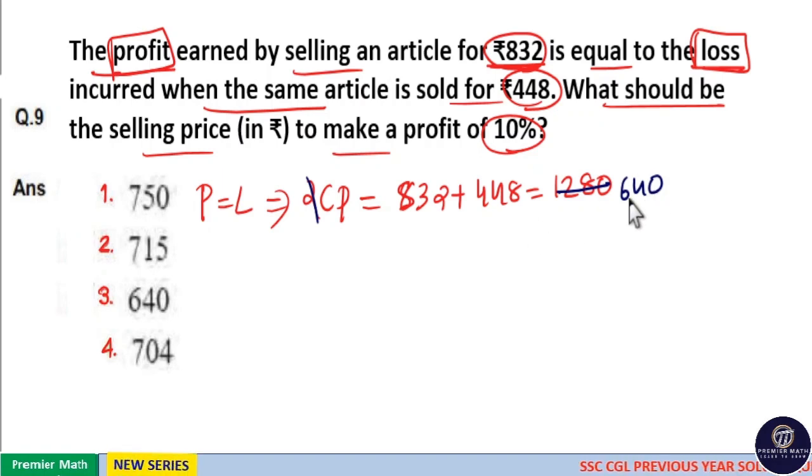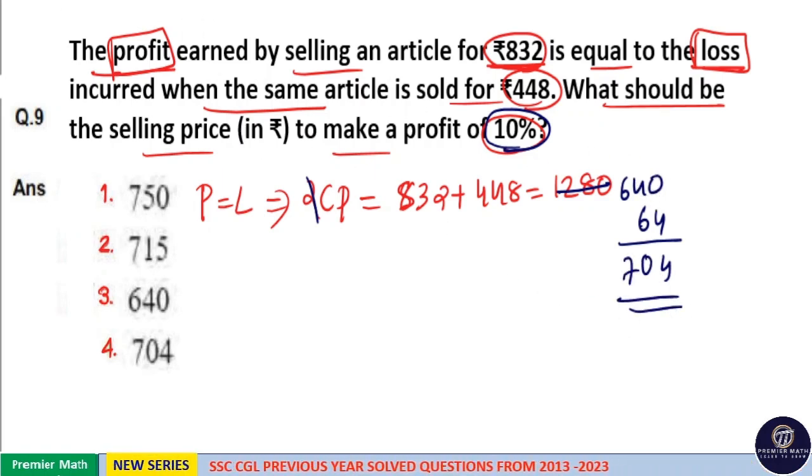So CP is 640. We need to make a profit of 10%, so 10% of 640 is equal to 64. So 640 plus 64 equals 704. Your answer is option 4.